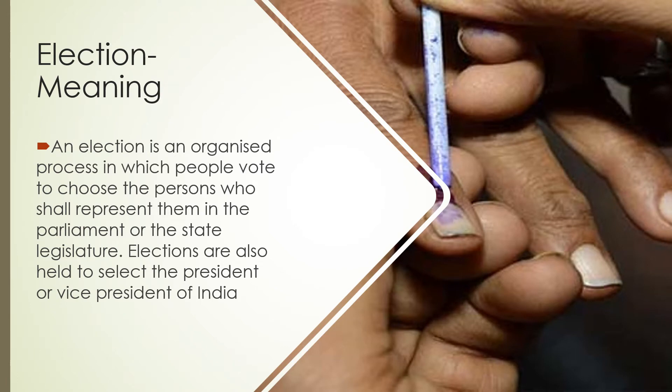What is an election? An election is an organized process in which people vote to choose the person who shall represent them in Parliament. Members of Parliament are called MPs, or members of the state legislature called MLAs. Elections are also held to select the President or Vice President of India.